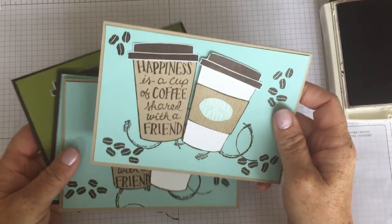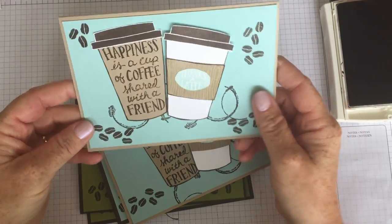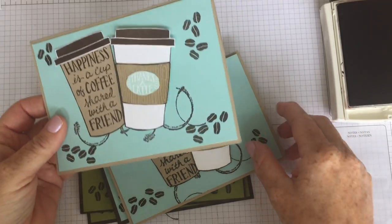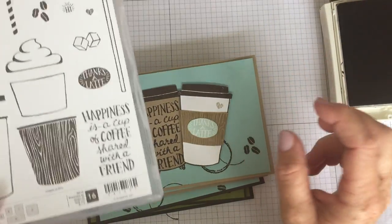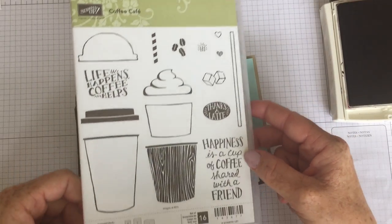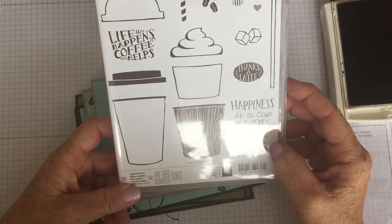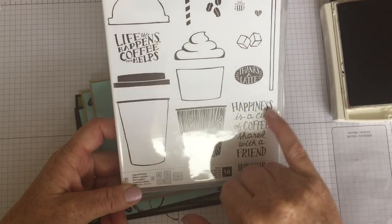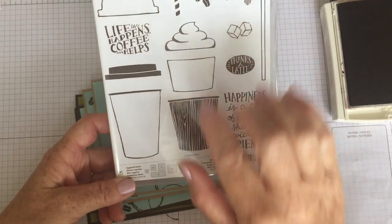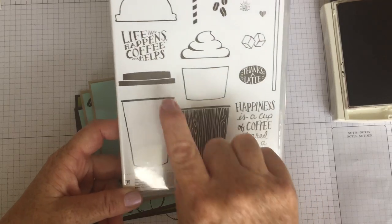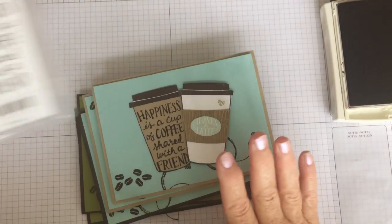Hi, it's Kate from inkstampshare.ink making a card today. It's going to be my customer thank you card for June, and we also made them at coffee and cards this week. I really love this Coffee Cafe stamp set from Stampin' Up that's in the new catalogue. It's just perfect for me because I live on coffee. It's really cute with nice sayings like 'happiness is a cup of coffee shared with a friend,' 'thanks a latte,' and 'life happens, coffee helps.'